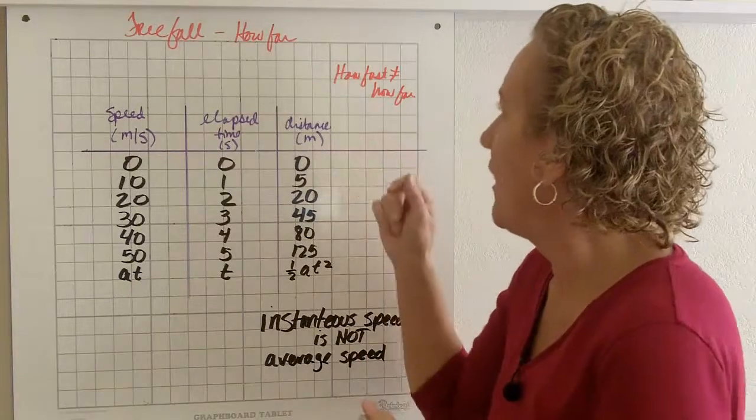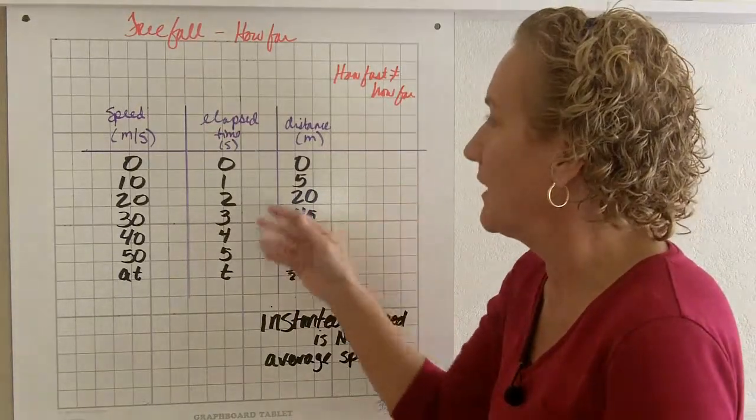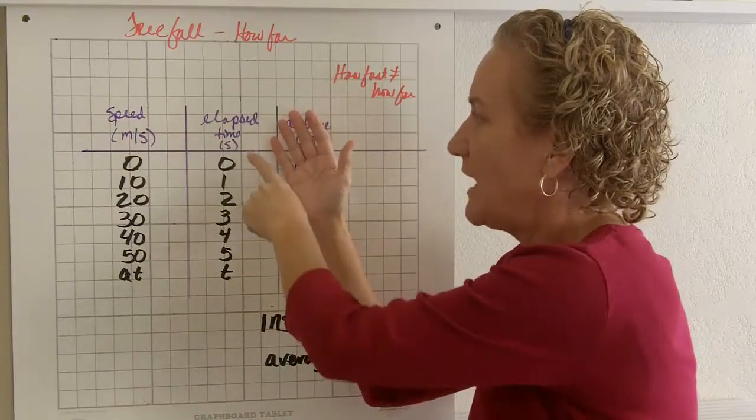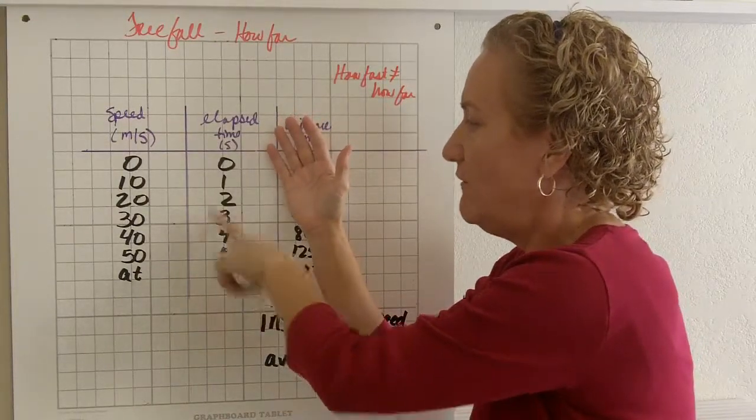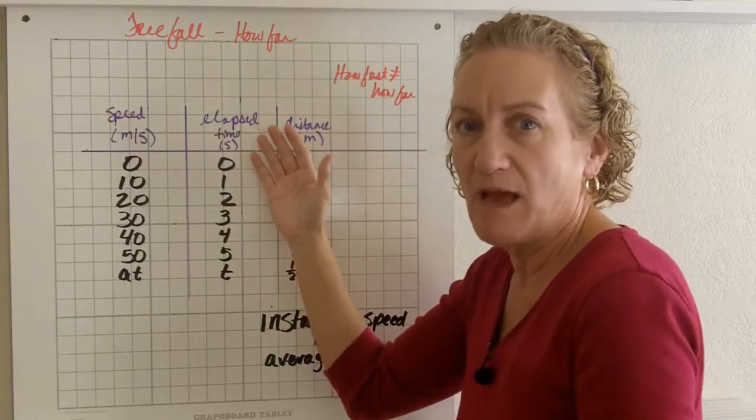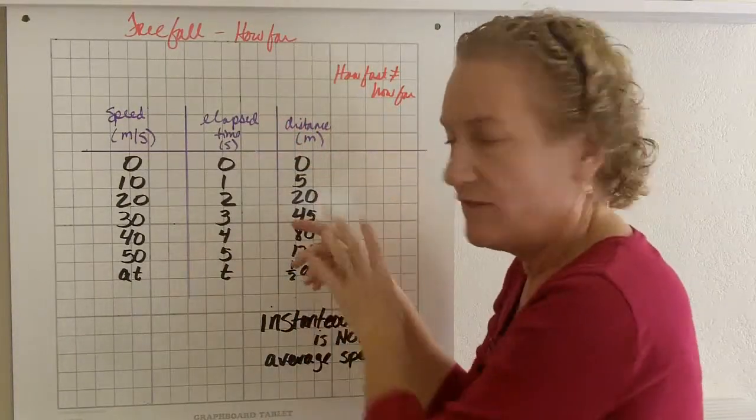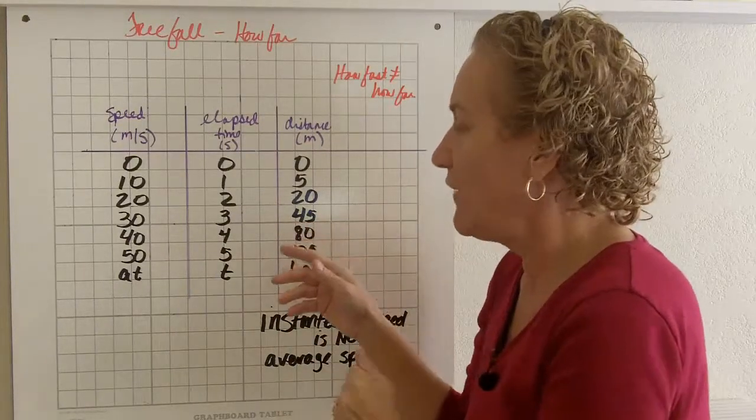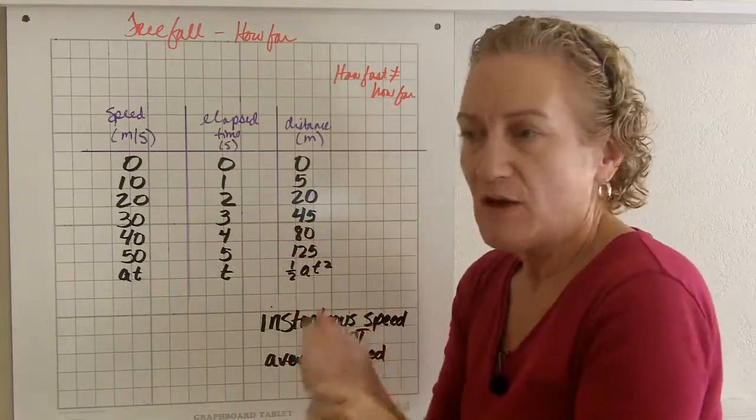So we're going to talk about how far something is going. This chart we had before, we had elapsed time in number of seconds, 0 through 5, and the speed that it went. And if you don't remember how to calculate it, go ahead and look back on that video. Today we're going to add this column which is on distance, how far it goes.